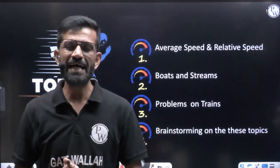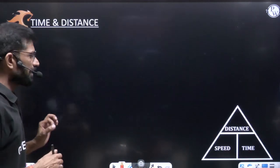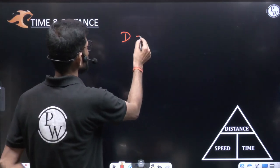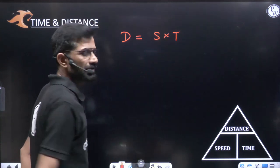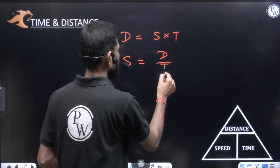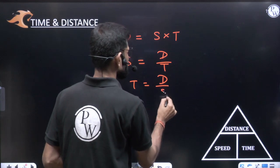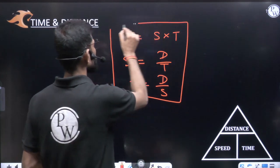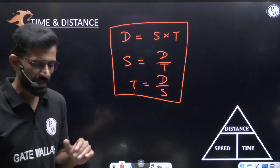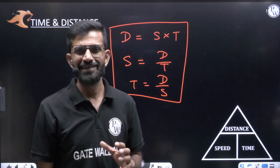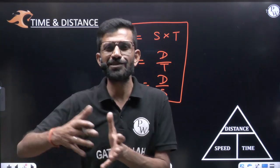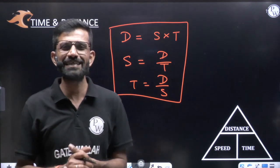Moving directly to the topic — time and distance. The very basic formula is: distance is equal to speed into time. Speed is equal to distance by time, and time is equal to distance by speed. These basic formulas will be useful in each and every question, so you should be well versed with all three.